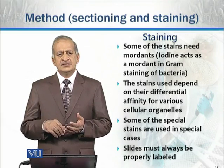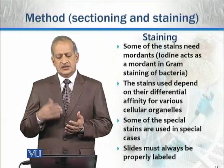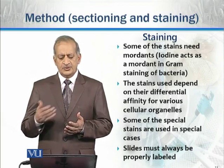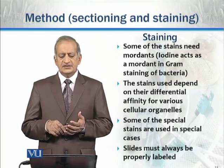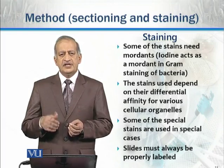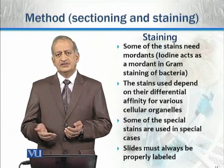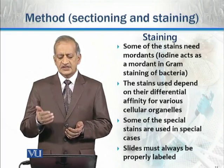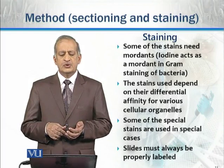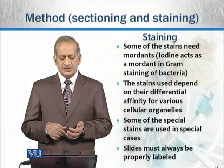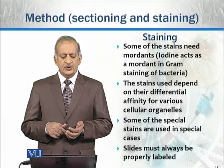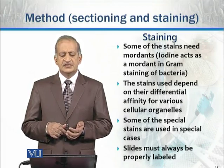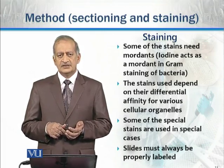Tissues are stained with different types of dyes, depending on the studies which we are performing. Some stains require mordants, which help in binding those stains onto the tissues. For example, iodine acts as a mordant in gram staining of bacteria. Stains used depend on their differential affinity for various types of cellular organelles.